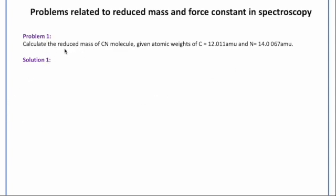It's a simple question asking to calculate the reduced mass of the CN molecule. Let us see how we go with the reduced mass. To calculate the reduced mass, we have the formula that is μ equals m1 into m2 divided by m1 plus m2. This is the formula for the reduced mass.